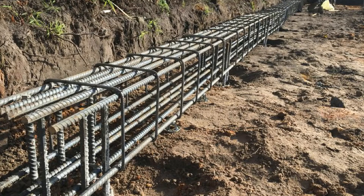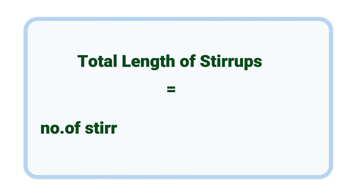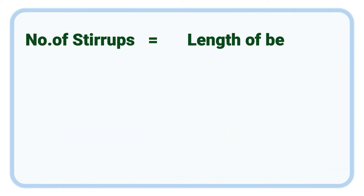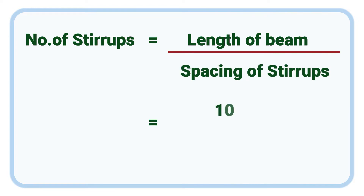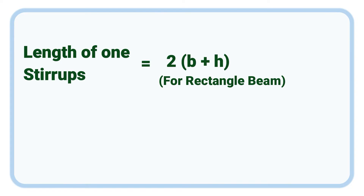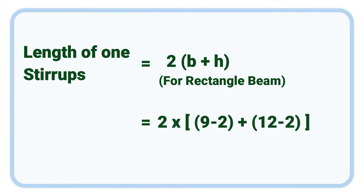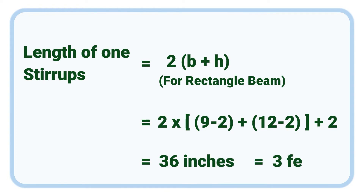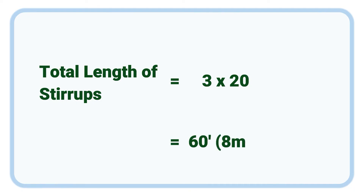Next we need to find the total length of stirrups, which equals number of stirrups multiplied by length of 1 stirrup. Number of stirrups equals length of beam divided by spacing — 10 feet divided by 0.5 feet — giving 20 stirrups. The length of 1 stirrup equals 2 into (B + H), which is 2 into (9 inches minus 2 inches cover) plus (12 inches minus 2 inches cover) plus 2 inches for hook, giving 36 inches, or 3 feet. Total length of stirrups equals 3 into 20, giving 60 feet of 8 mm dia.